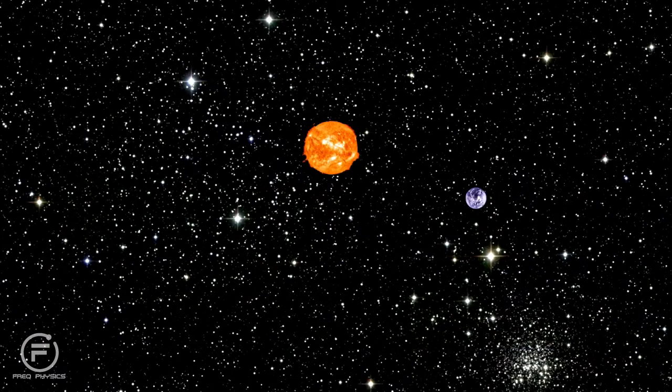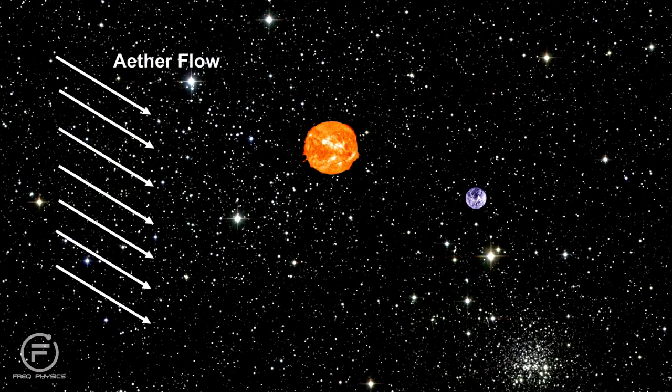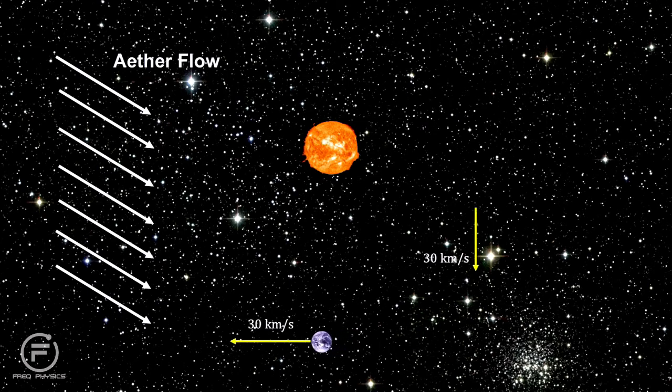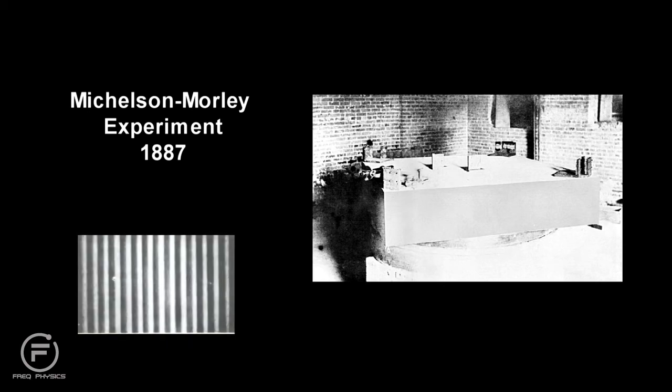Michelson and Morley understood that the Earth is moving through the ether in different directions at different seasons. In our segment on the solar system, we found that the Earth is revolving around the Sun at 30 km per second. What Michelson and Morley did was to measure the ratios for light traveling with the ether and across the ether to determine the speed of the ether, just like we did for the boats in the river. Here's the apparatus they used. It worked like the one from MIT, only it's mounted on a stone slab and floating in a pool of mercury to allow for slowly rotating the interferometer.